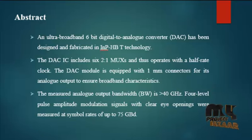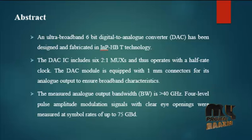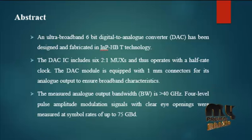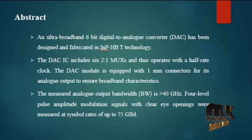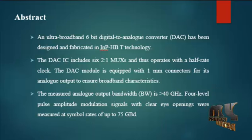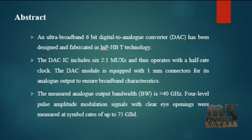This multiplexer Digital to Analog Conversion module has the widest bandwidth of any previously reported Digital to Analog Converters and is suitable for high symbol rate optical transmitters. The 2-2-1 MUX multiplexes 12 half-rate digital signals into 6 full-rate digital signals. Then the Digital to Analog Converter converts those 6 digital signals into an analog signal, accepting half-rate inputs and producing a full-scale output amplitude.